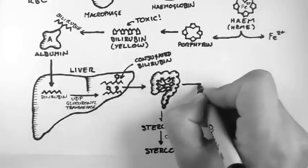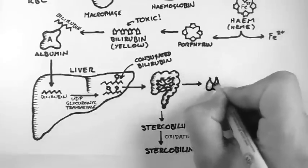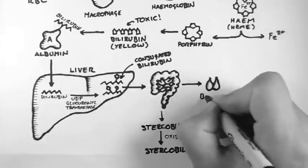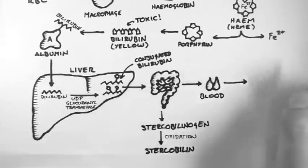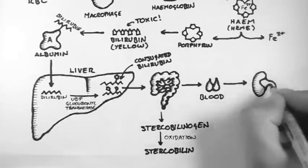However, not all stercobilinogen gets excreted. A closely related form called urobilinogen gets absorbed back into the blood which in turn is filtered by the kidneys.